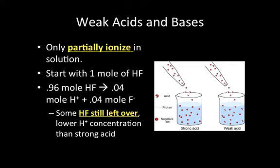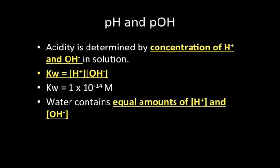Looking at the picture on the right: with a strong acid, all of the H+ protons completely ionize from the acid, whereas with a weak acid, there are still some acid molecules left over. Acidity is determined by the concentration of H+ and OH- in solution — if there's more H+ than OH-, it's an acid; if more OH- than H+, it's a base. One key formula is KW, where KW equals the H+ concentration times the OH- concentration, and KW equals 1 × 10⁻¹⁴. Water contains equal amounts of H+ and OH-.